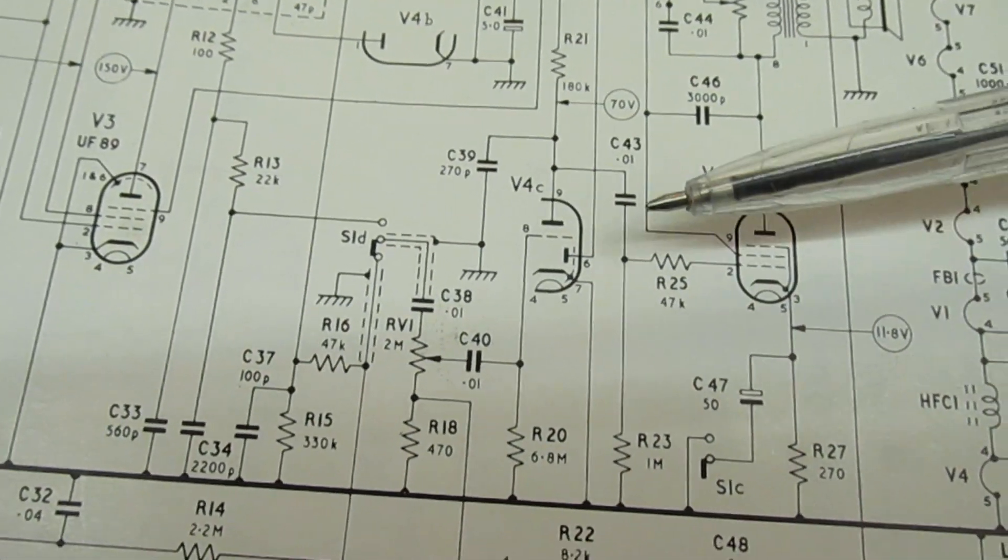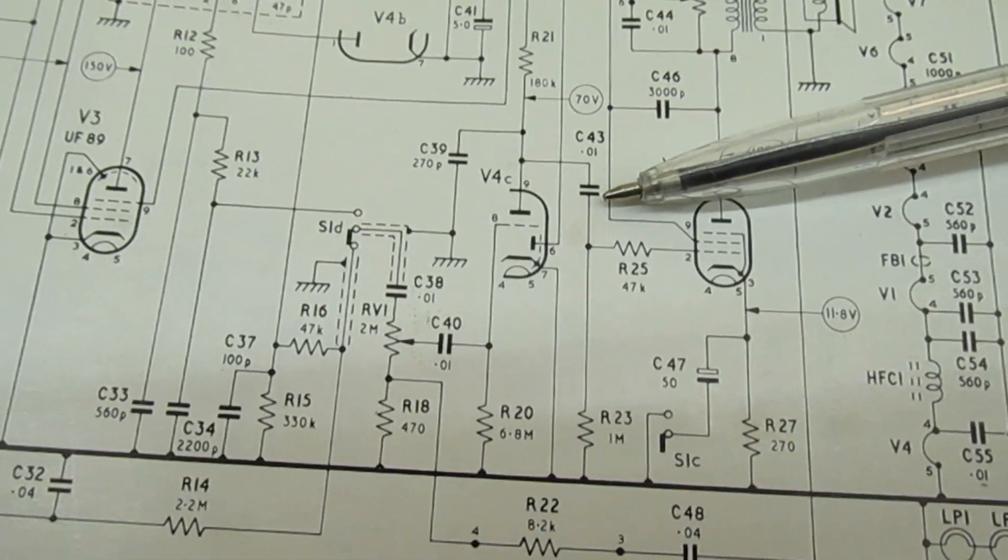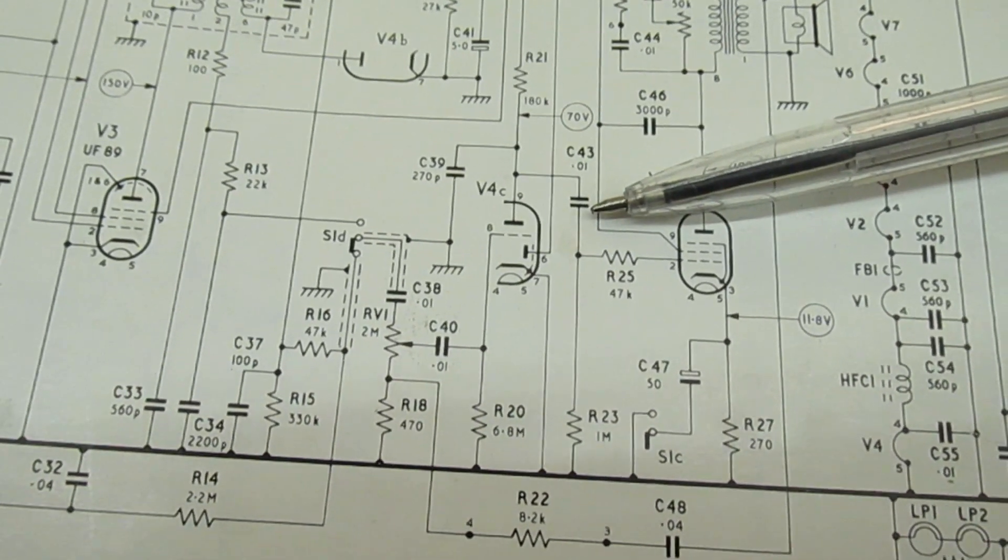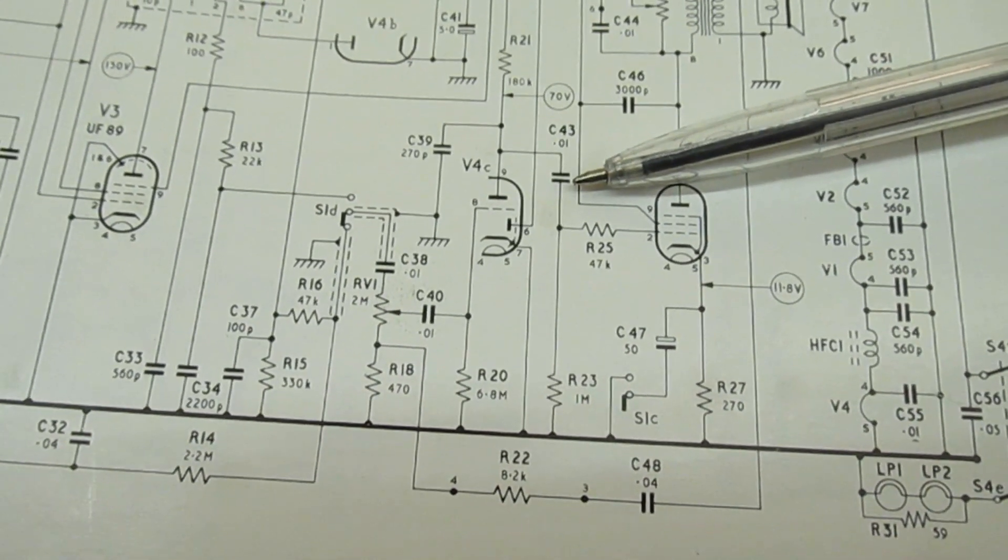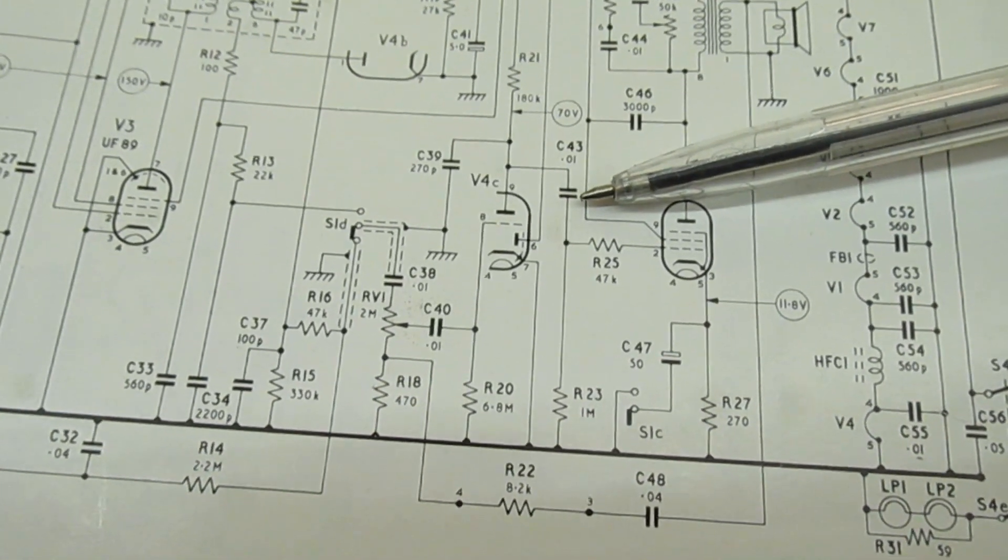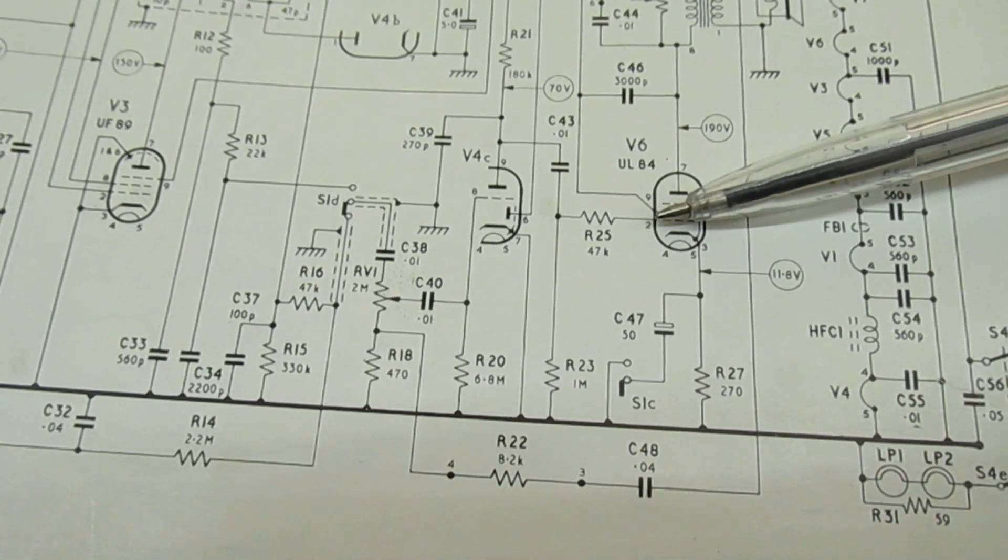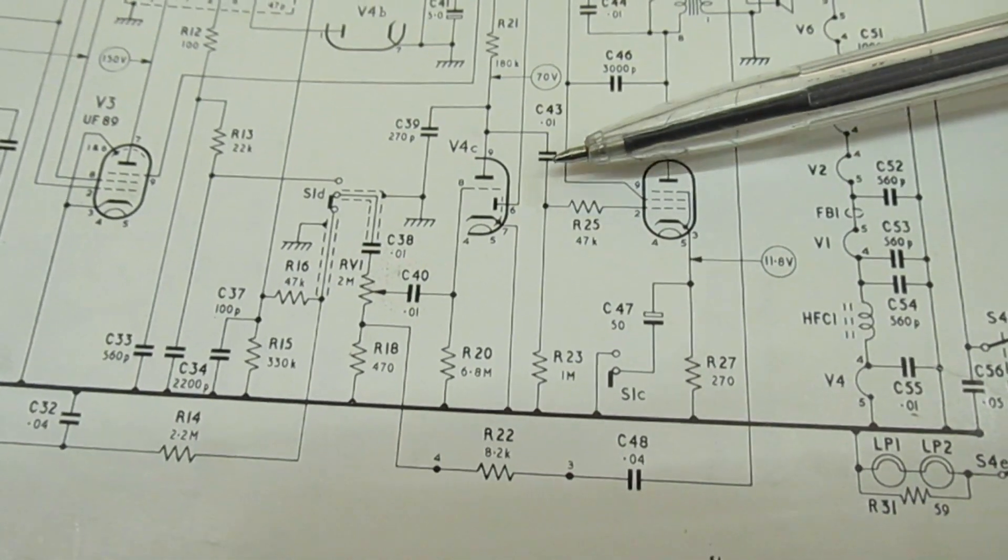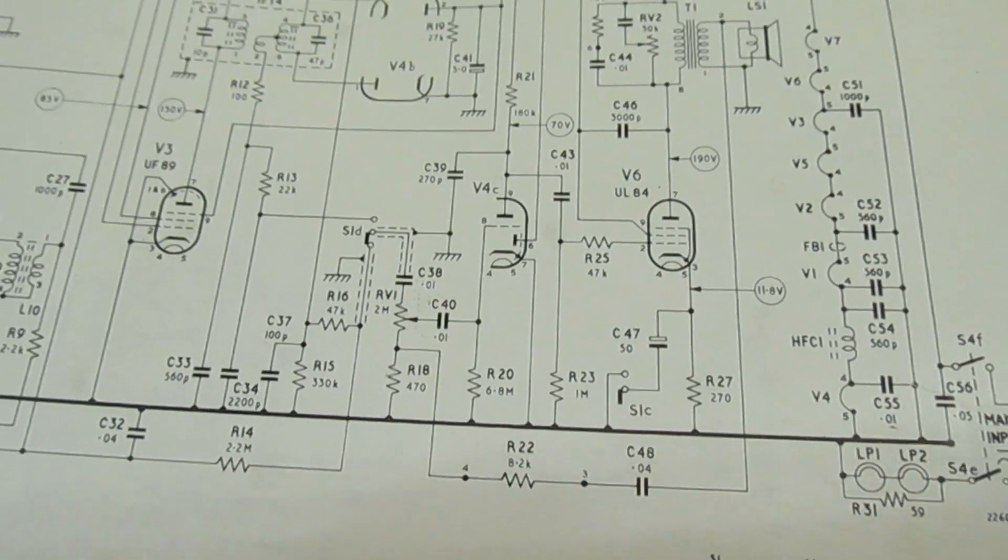In a lot of valve radios, the symptom when that's leaky is quite often the volume control will crackle when you turn it. If you've got a crackly volume control, don't automatically think it's the control itself that's faulty. Measure the voltage there. If there's any positive voltage, it's this that's causing the crackle when you turn the volume control.